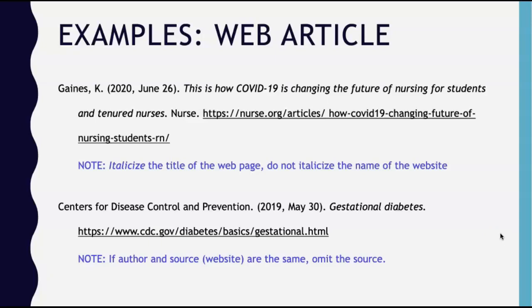The second example is a web article written not by an individual person, but by an institution — the Centers for Disease Control and Prevention. Because this institution is both the author and sponsor of the article, you can list 'Centers for Disease Control and Prevention' where the author's name would go, followed by a period. Next is the date in parentheses, then the title of the webpage, 'Gestational diabetes,' in italics. Lastly, include the URL to the webpage. If the author and the name of the website are the same, you do not need to include the name of the website — just use the institution as the author.